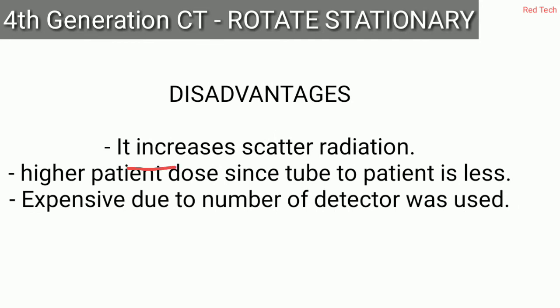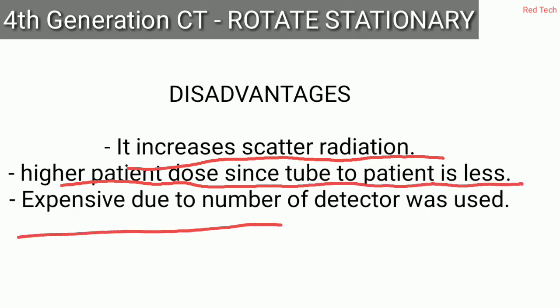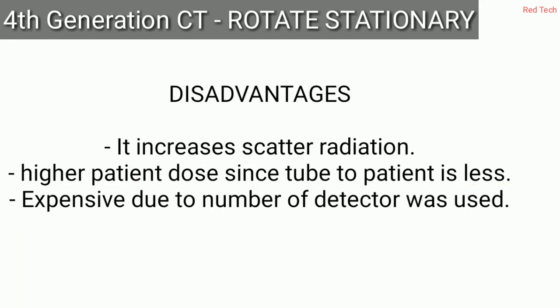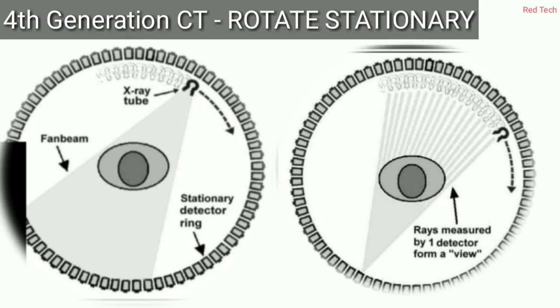Looking at the disadvantages: it increases scatter radiation, since increasing the number of detectors also increases scatter. There is higher patient dose because the tube-to-patient distance is less. It is also expensive due to the large number of detectors used — this is common sense, as more detectors make the CT machine more costly.